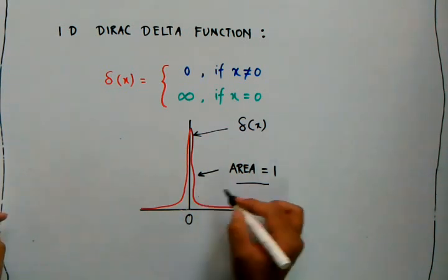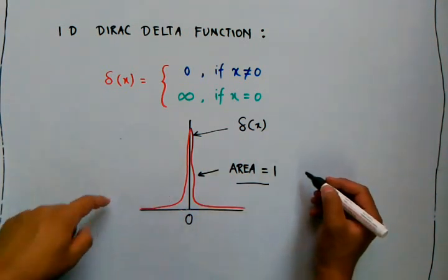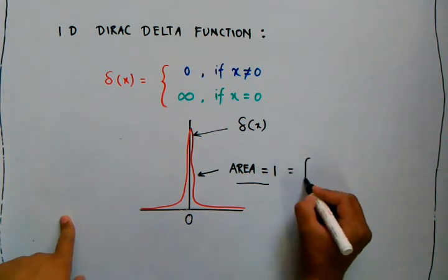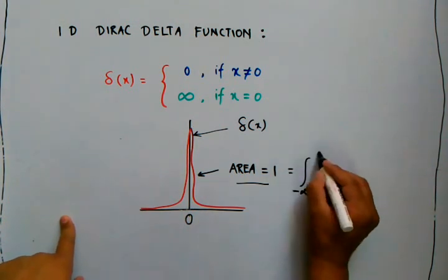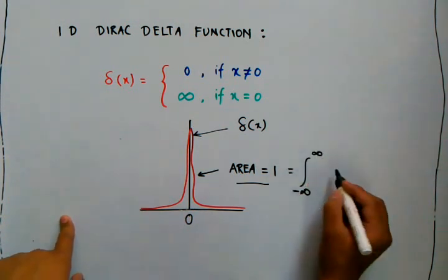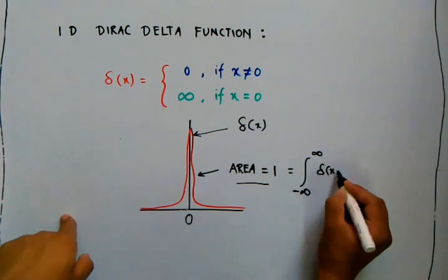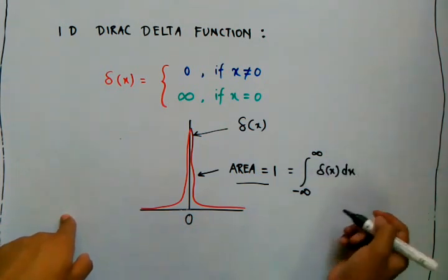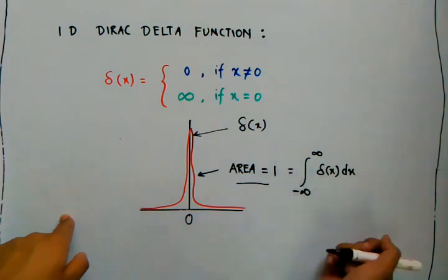To find the area, we simply integrate the function. If we integrate the Dirac delta function from minus infinity to infinity with respect to x, we get the value equal to one.